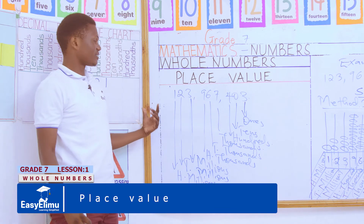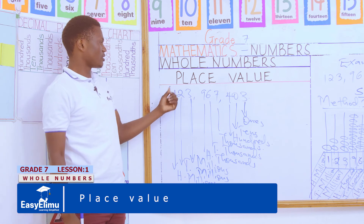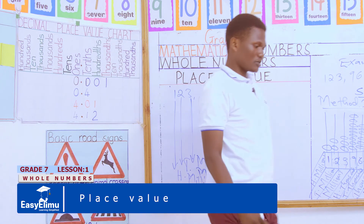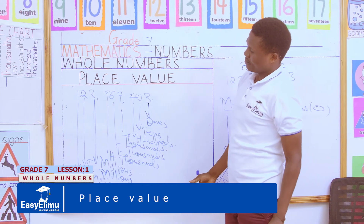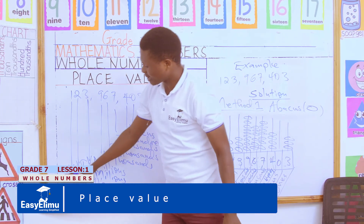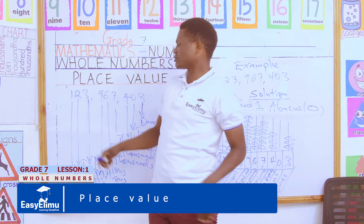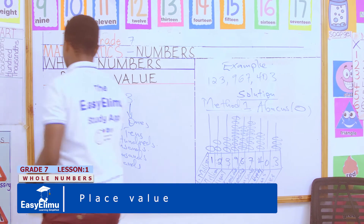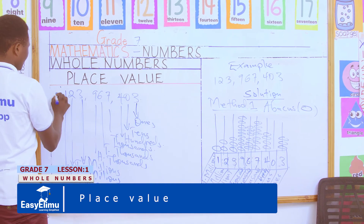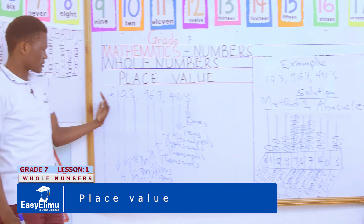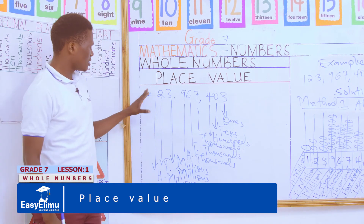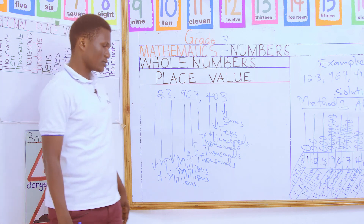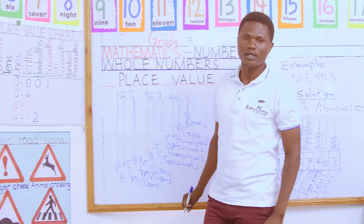For those curious about what comes after hundreds of millions: the next place value would be billions. So if there were another digit, say x, its place value would be billions. However, in this class we are only going up to hundreds of millions and will stop there.